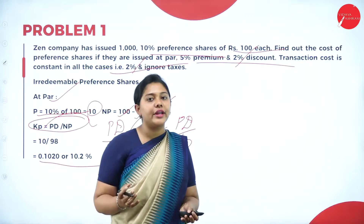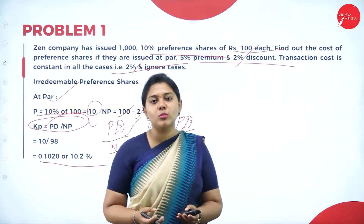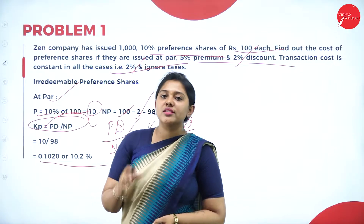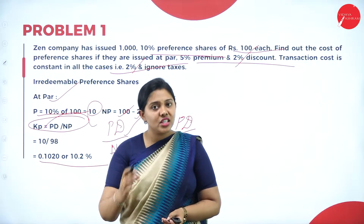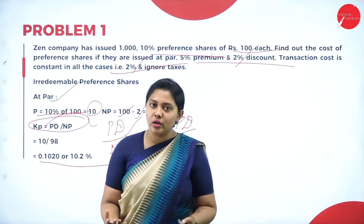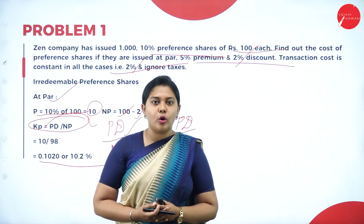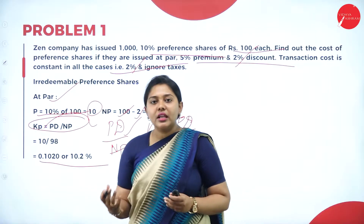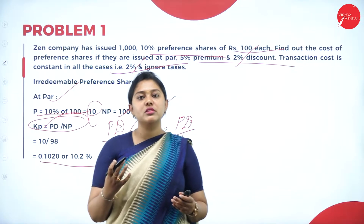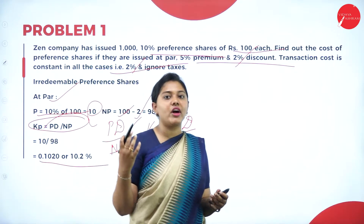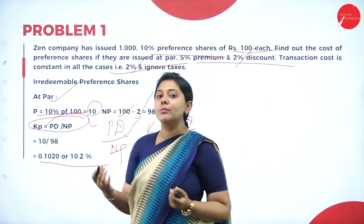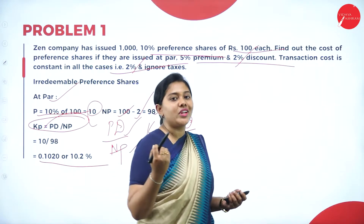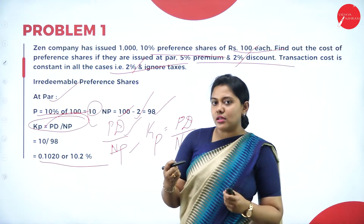How will you know whether it is a redeemable or irredeemable problem? When the number of years is given in the question, it is a redeemable problem. When the number of years is not given, it is an irredeemable problem. In this question, tax rate is ignored, making it an irredeemable problem. The formula is preferential dividend divided by net proceeds. In a single problem, I have shown you the calculation for issued at par, at premium, and at discount.